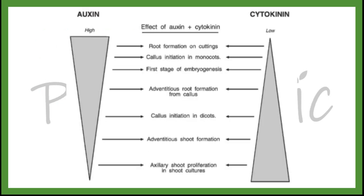Here is a general interaction between osin and cytokinin. At high osin concentration and low cytokinin concentration, root formation on cuttings will be induced. At very low osin concentration and high cytokinin concentration, axillary shoot proliferation in shoot culture will be observed. However, all these interactions are general information, as the interactions of osin and cytokinin depend on the plant genotype and the explant used.